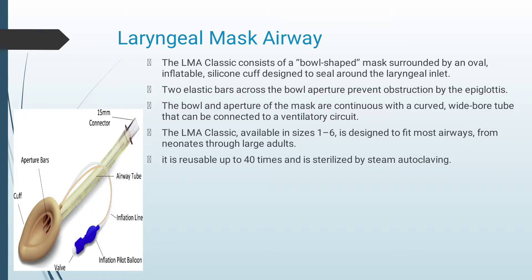To describe a common supraglottic airway device — the laryngeal mask airway. This is the LMA Classic. The LMA Classic consists of a bowl-shaped mask surrounded by an oval inflatable silicone cuff designed to seal around the laryngeal inlet. Two elastic bars across the bowl aperture prevent obstruction by the epiglottis. The bowl and aperture of the mask are continuous with a curved wide-bore tube that can be connected to a ventilatory circuit. The LMA Classic is available in sizes 1 through 6, is reusable up to 40 times, and is sterilized using steam autoclaving.